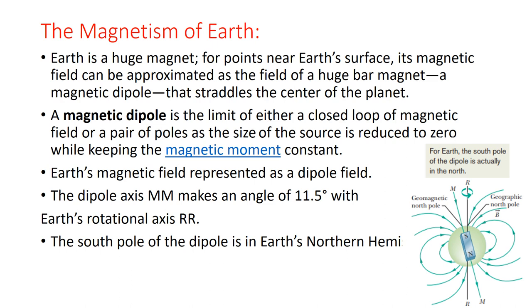The next topic is the magnetism of Earth. Earth is a huge magnet. Earth has a north and south pole, and around it is a magnetic field. The magnetic field of the Earth exists in the form of complete loops, which we call magnetic dipoles. So magnetic dipoles are closed loops, and in these loops the magnetic field exists at any point.